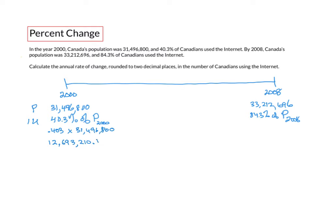Using the same process, the number of internet users in 2008 is 27 million 998 thousand 302.73. We can't have a fraction of a person, but we'll keep the decimals for now to increase the accuracy of our solution. Because we want an annual rate of change, let's break up our timeline into yearly intervals.